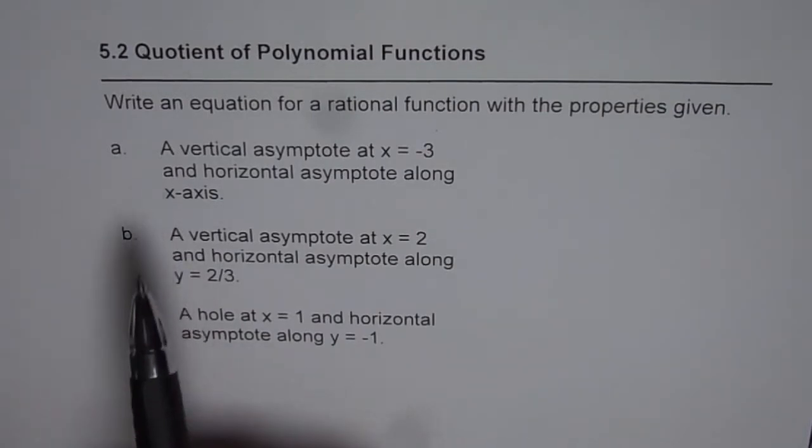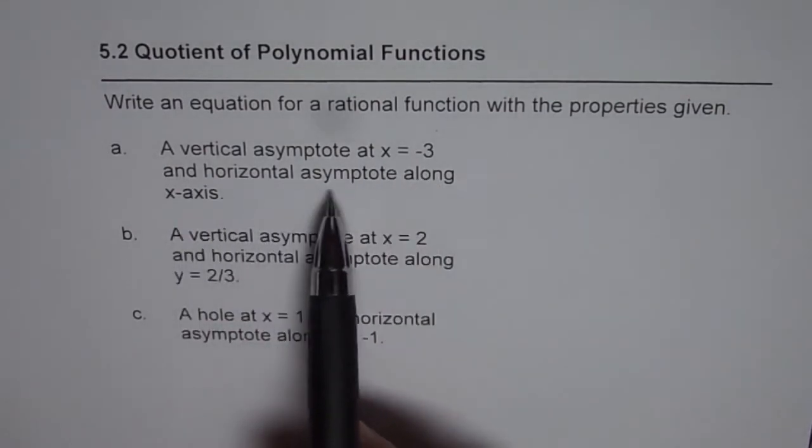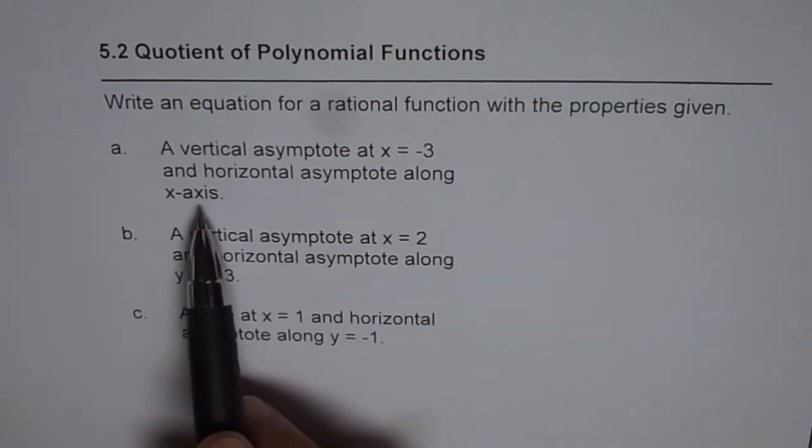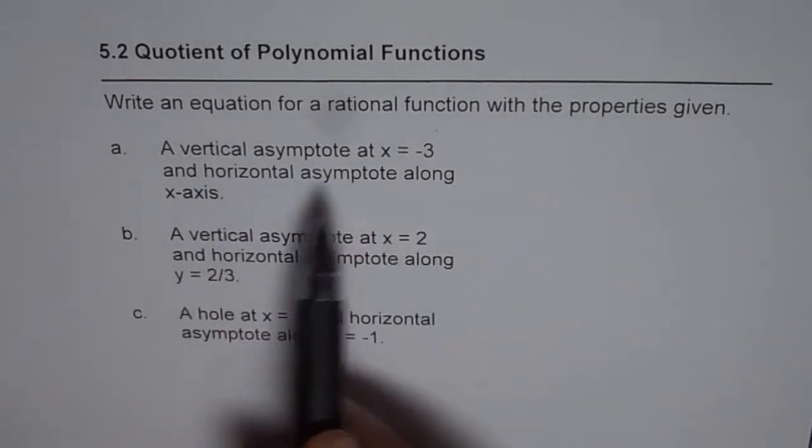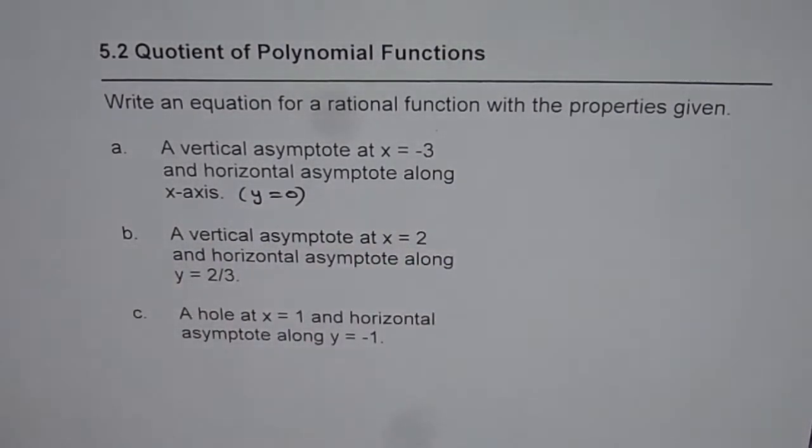First one is a vertical asymptote at x equals minus 3 and horizontal asymptote along x-axis. So when we say horizontal asymptote along x-axis, that means y equals 0.